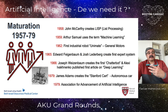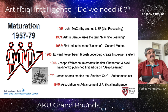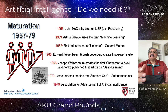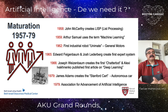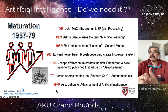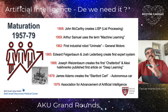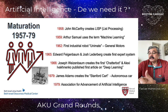Then came the maturation era. John McCarthy created LISP, a list-processing computer language. Arthur Samuel coined the term 'machine learning' in 1959. The first industrial robot, Unimate, was developed by General Motors in New Jersey for assembly-line car production. Edward Feigenbaum and Josh Lederberg created the first expert system. Most importantly, John Adams created the Stanford Cart — an AI-based cart that could navigate the Stanford campus and be directed from one department to another — a huge achievement.